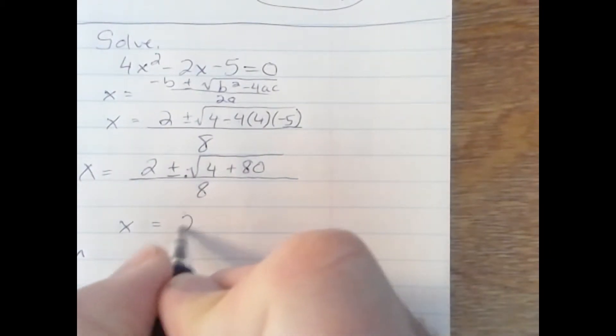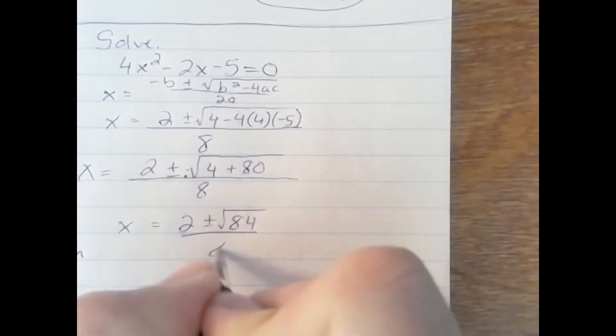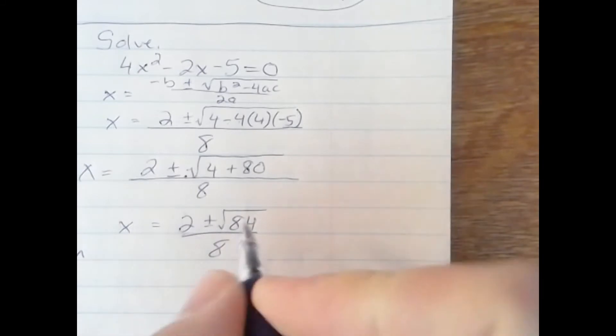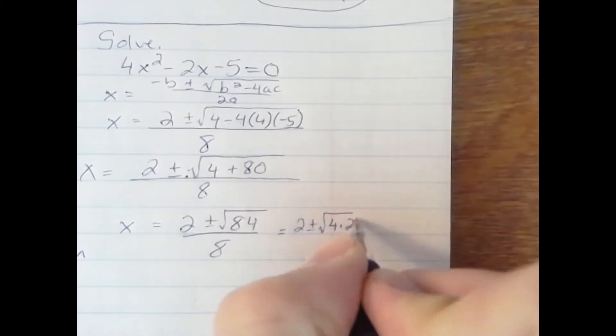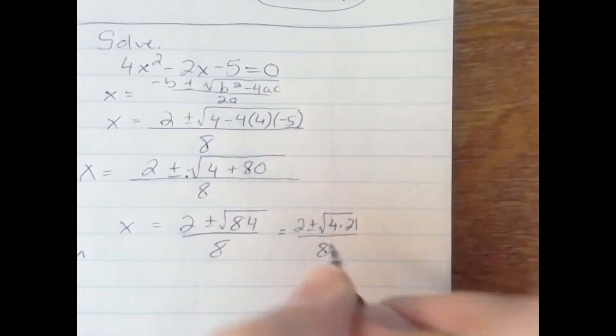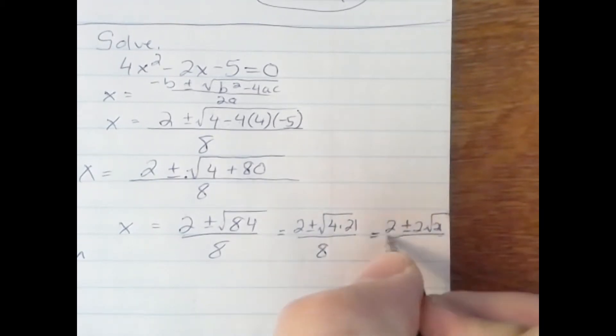Here we are 2 plus or minus square root of 84 all over 8. And then 84 breaks down into 4 times 21. The square root of 4 is 2. So now I have 2 plus or minus 2 radical 21 all over 8.